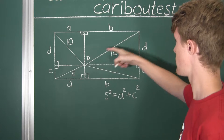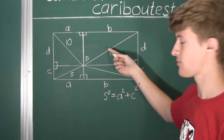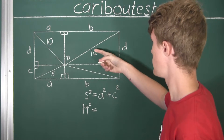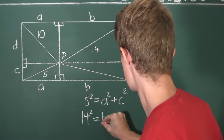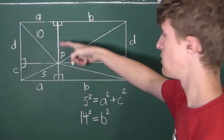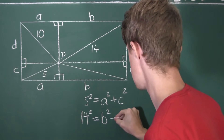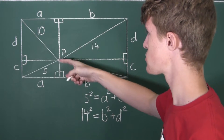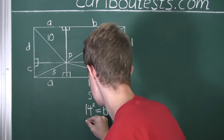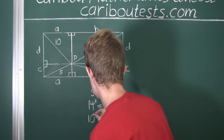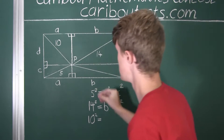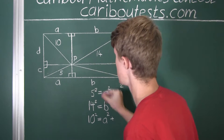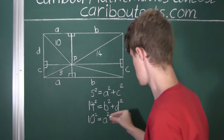Now let's look at this triangle here. Again, the hypotenuse is 14. So 14 squared equals B squared plus this length squared, which we know is D, so plus D squared.